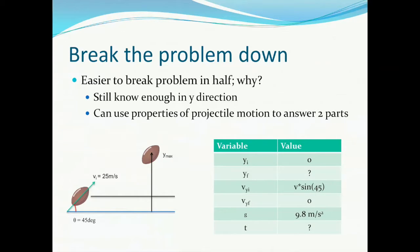So rewriting the table, we have that our initial y position is 0. The final position is going to be the maximum height, something we're asked to find in the problem. We know the initial velocity in the y component, and because we're choosing to solve for half the problem, we set the final y velocity equal to 0. Again, we know gravity, and in this case, the time will be the time it takes to reach the highest position.